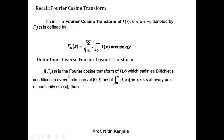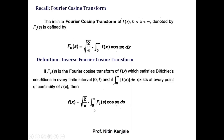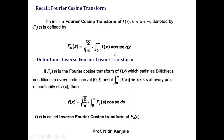Using this definition we will define the inverse Fourier cosine transform. If F_cs is the Fourier cosine transform of f(x) which satisfies Dirichlet's conditions in every finite interval [0, l], and if the integral of |f(x)| dx over zero to infinity exists at every point of continuity of f(x), then f(x) = root(2/π) × ∫F_cs cos(sx) ds from 0 to ∞. In the Fourier cosine transform definition, you simply switch the positions of f(x) and F_cs to get the inverse definition.